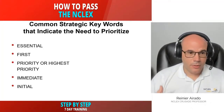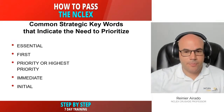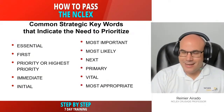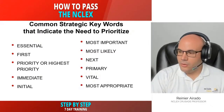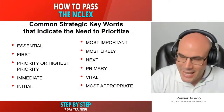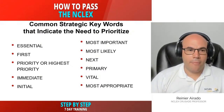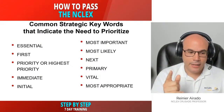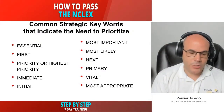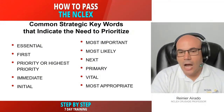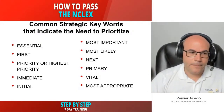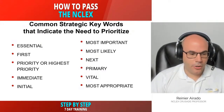Common keywords that indicate the need to prioritize include: essential, first, priority, highest priority, immediate, initial, most important, most likely, next, primary, vital, most appropriate. When you see these keywords, tell yourself: what priority strategy can I use? Assessment versus implementation, Maslow's hierarchy of needs — these are strategies we will discuss in our seven-day training.